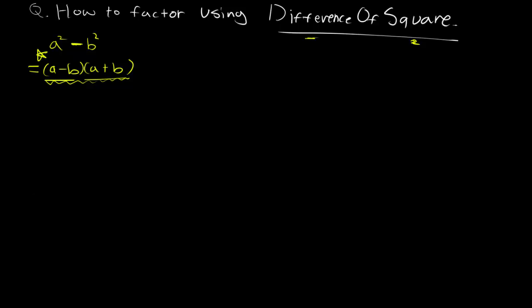For the practice problem, I came up with this question: 4x² minus 9. The first thing we have to do is recognize that this is a difference of squares because we have a square here.